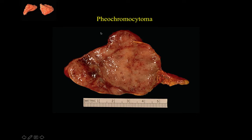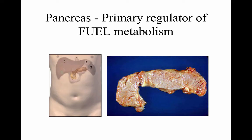A pheochromocytoma is an adrenal tumor that is usually benign but dramatically increases the hormones released from the adrenal gland. A benign tumor growth within the adrenal medulla causes a greater increase in release of all the hormones it produces.